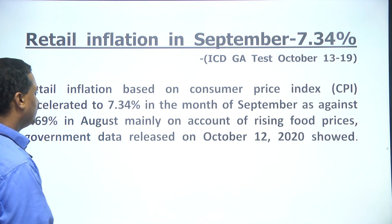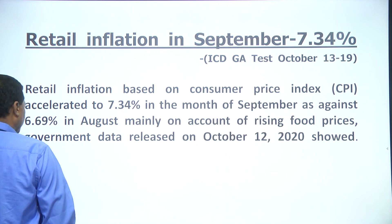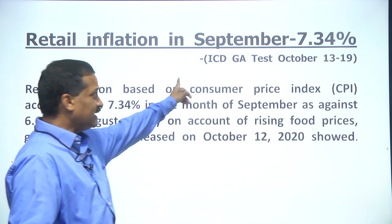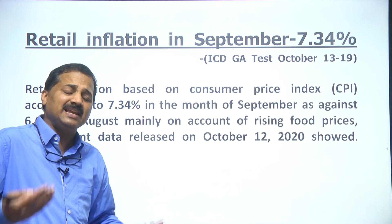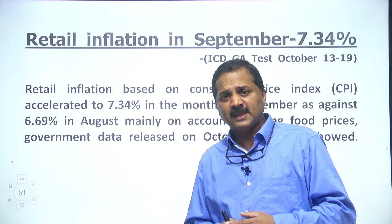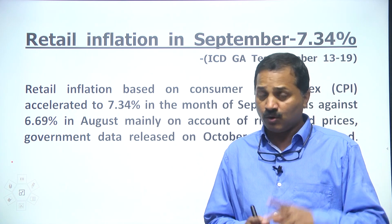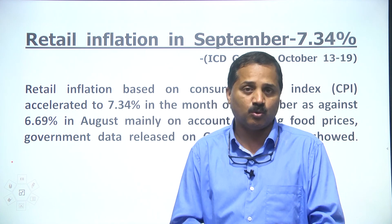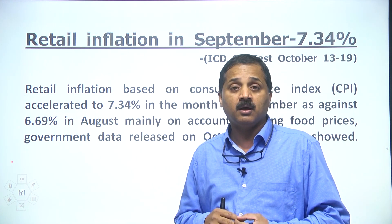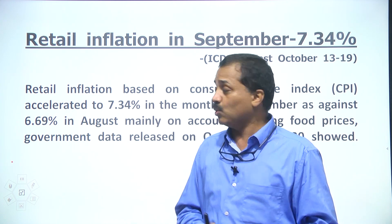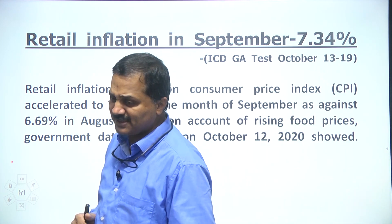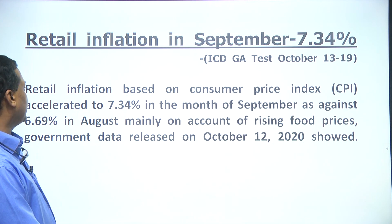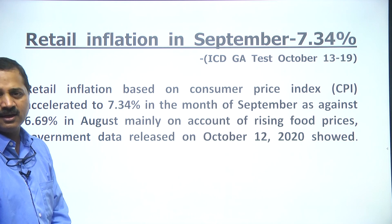Retail inflation in September is 7.34%. This was in ICD's GA test October 13–19. What is retail inflation? Inflation is the rise in price, calculated at the retail level and the wholesale level. Retail level inflation will be more than wholesale level inflation. When prices go up, our purchasing power will come down. Anybody preparing for competitive exams, especially bank exams, must closely watch inflation. The consumer price index based retail inflation figure of 7.34 is exactly what they asked.